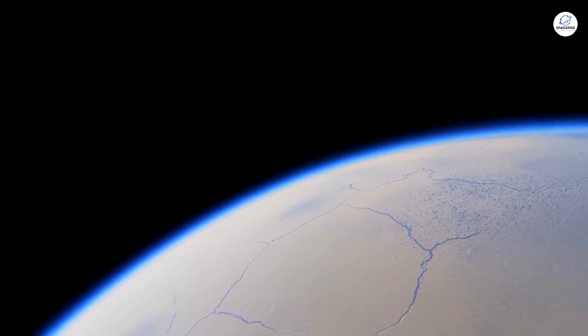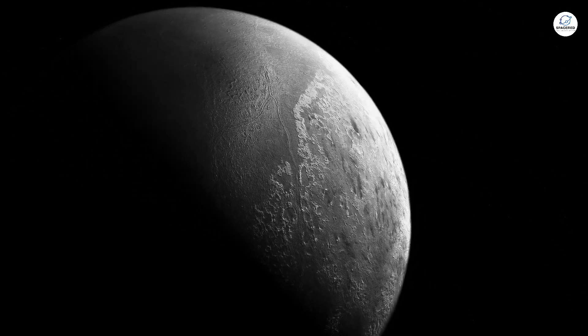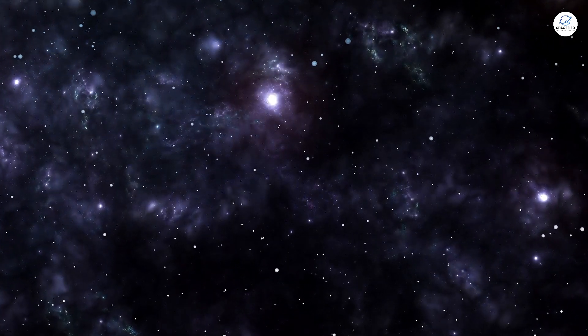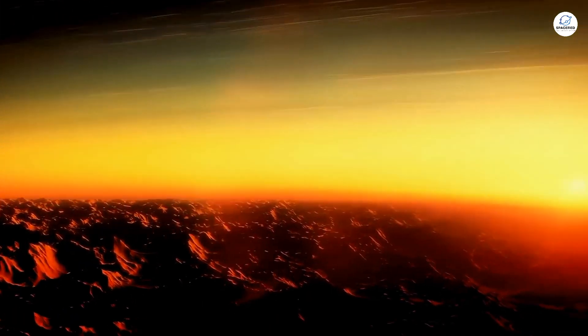Despite this proximity, the planet remains eerily dark, and scientists still don't fully understand why. Some speculate that its atmosphere contains light-absorbing chemicals, while others think it might be due to its scorching temperatures.